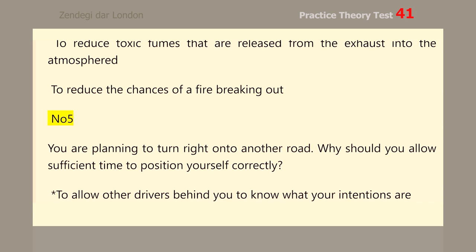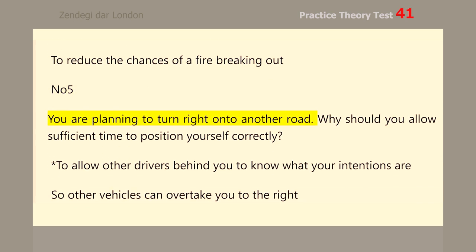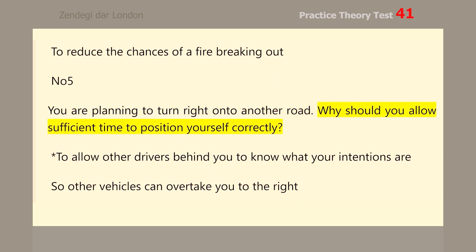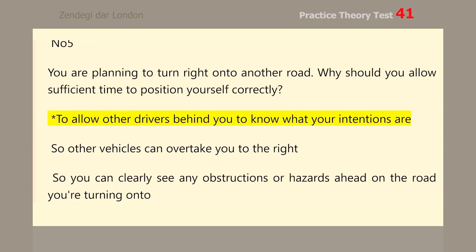Number 5. You are planning to turn right onto another road. Why should you allow sufficient time to position yourself correctly? To allow other drivers behind you to know what your intentions are.